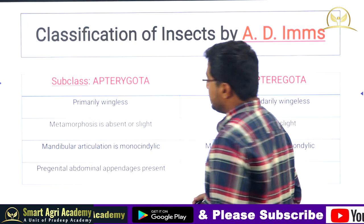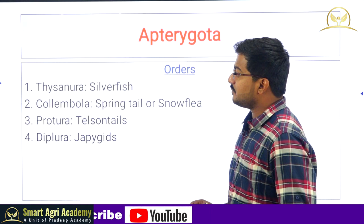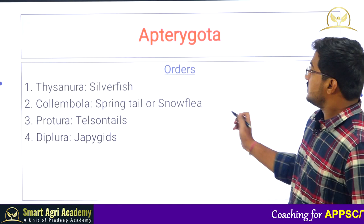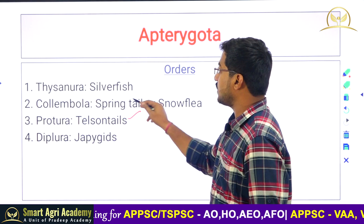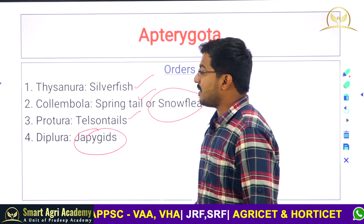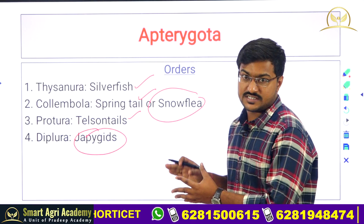Apterygota has four important orders: Thysanura, Collembola, Protura, and Diplura. Proturans are called telson tails; Collembolans are called springtails as well as snowfleas; Thysanura is called silverfish; and Diplurans are called campodeids. Most Apterygot orders are classified based on the tail. Memorizing these names and scientific names is very important from an exam point of view to answer questions accurately in competitive exams.